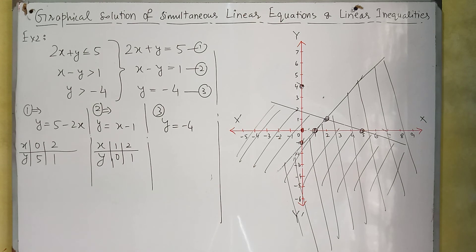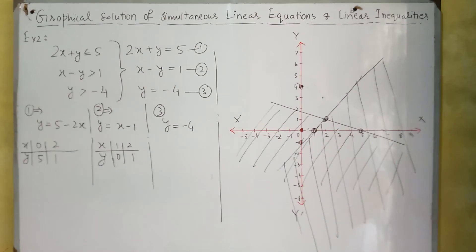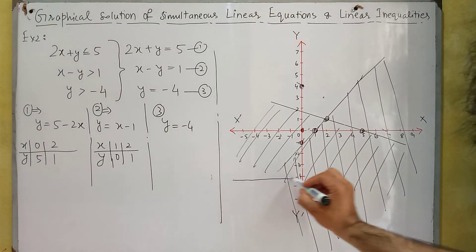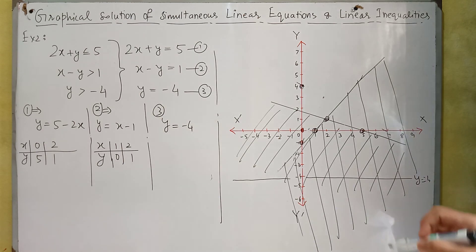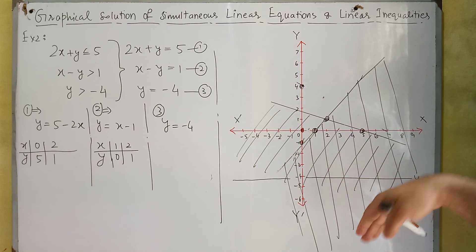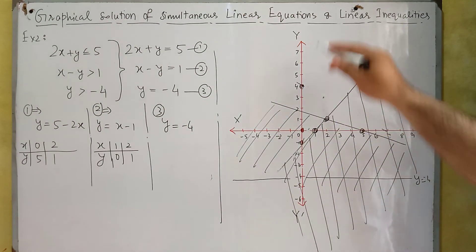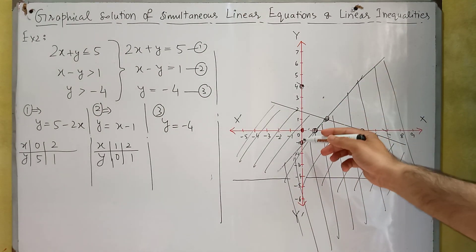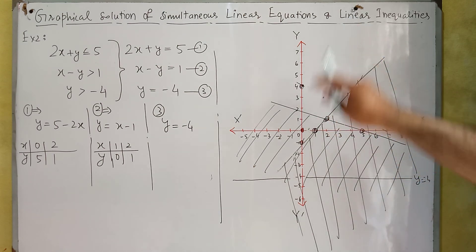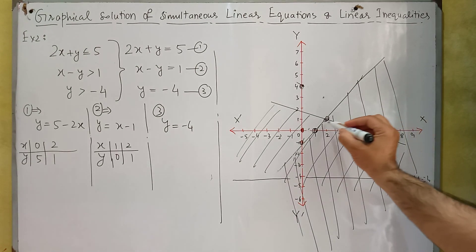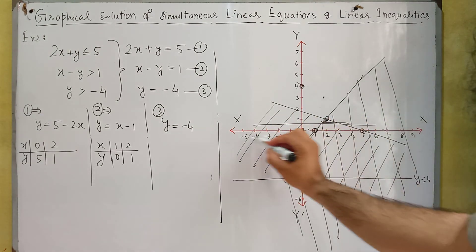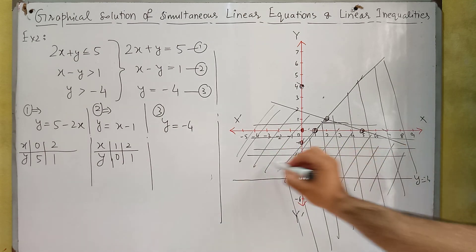Now for the last inequality, Y is greater than minus 4. We know this line is Y equals minus 4. The required region is above this line, because values like minus 3, minus 2, minus 1, 1, and 2 are all greater than minus 4.